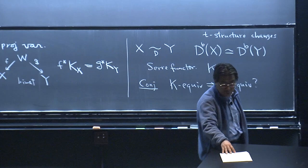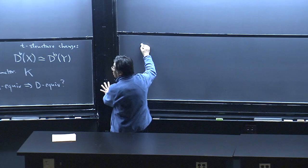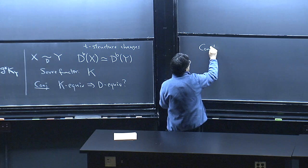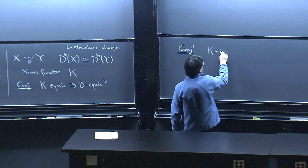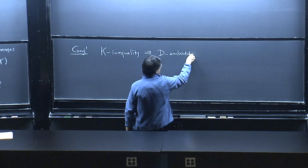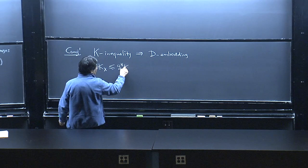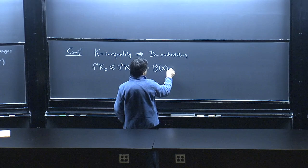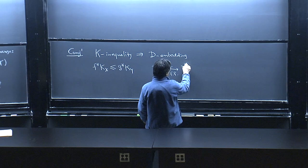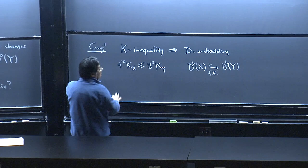There is an extended version. The extended conjecture is the following: K-inequality implies D-embedding. That means if the pullback of K satisfies an inequality — not just equality — then the derived category has a fully faithful embedding. This is a generalization of the equivalence conjecture, and in this talk I will be more concerned with this conjecture.